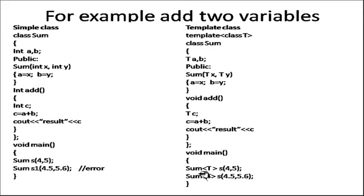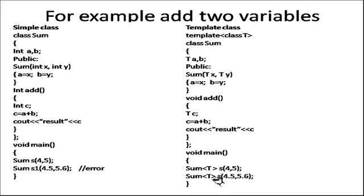In the void main method, we are declaring an object with type parameter Sum<int>. This int will be copied into T, meaning T will be replaced by integer and the whole class replaces T with integer. Similarly, the next object you can write as Sum<float> with S(4.5, 5.6). So this is the example of a template class — a class with a template means a class with a parameter.